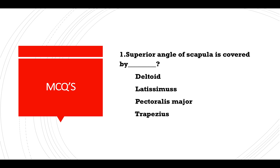MCQ: The superior angle of the scapula is covered by — deltoid, latissimus dorsi, pectoralis major, or trapezius? Answer: Trapezius.